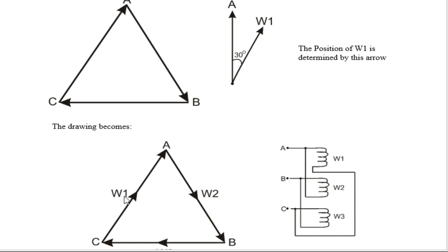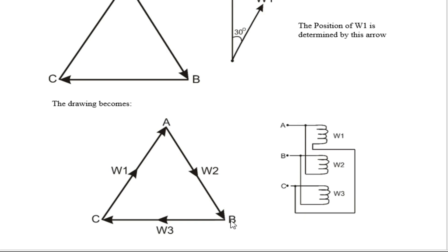Looking at the next diagram, you can see the windings: the blue one — W1 — has its polarity side connected to A; W2 has its polarity side connected to B; W3 has its polarity side connected to C. The non-polarity side of W2 is connected to A, and the non-polarity side of W3 is connected to B. Now we draw the transformer windings: W1, W2, and W3. The top side is the polarity side for each — polarity side of W1, polarity side of W2, polarity side of W3 — and the bottom side is the non-polarity side of W1, W2, and W3.